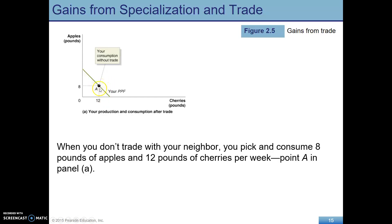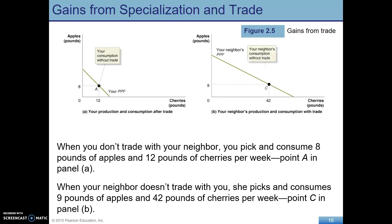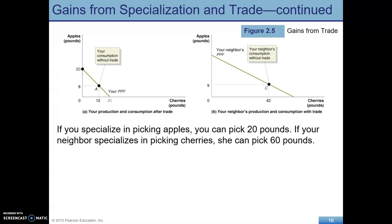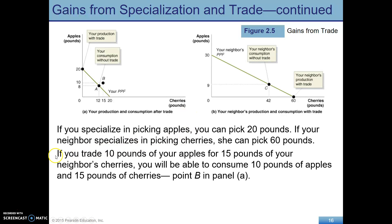Here's your PPF. Say you choose somewhere in the middle — that's your consumption without trade. And here is your neighbor's consumption before trade. Both you and your neighbor are picking some of both fruits. If you specialize, you're going to pick only apples, spending all your time picking apples. And your neighbor is going to spend all her time picking cherries — 60 pounds of cherries. If you then trade 10 pounds of your apples for 15 pounds of your neighbor's cherries, you'll be able to consume 10 pounds of apples and 15 pounds of cherries — a point that was previously unattainable on your own PPF.